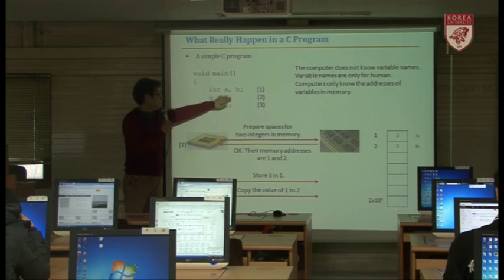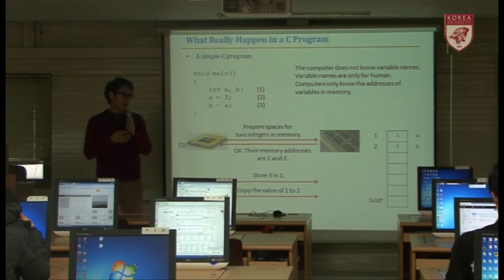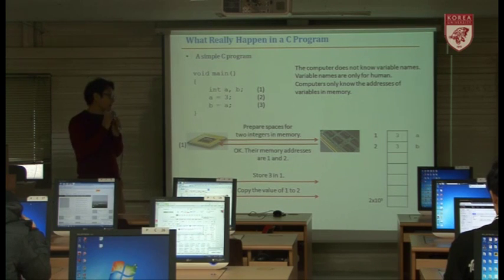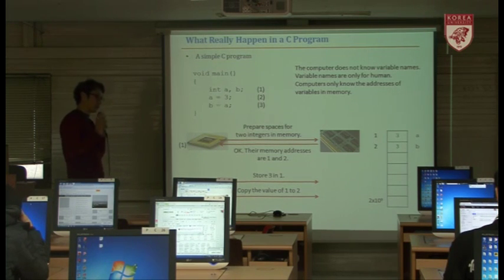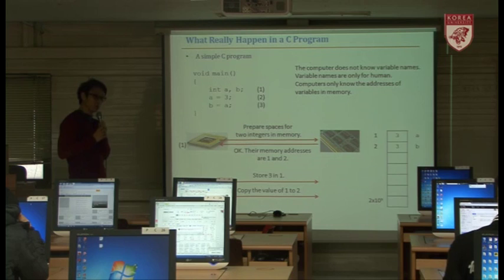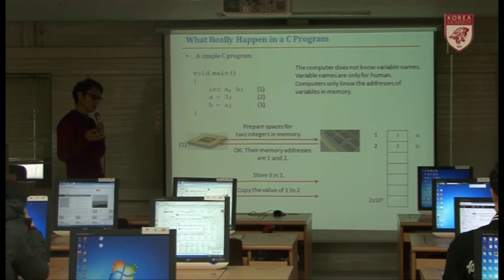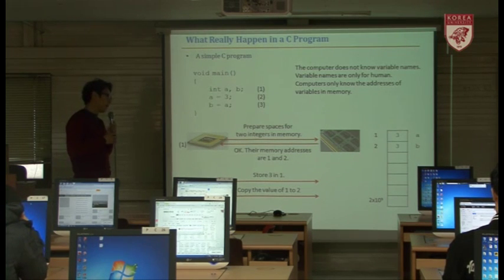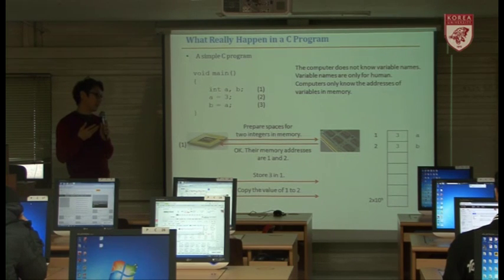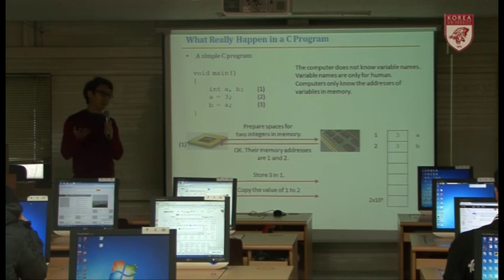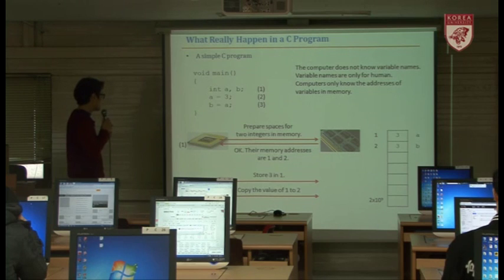Even though we use variable names like A and B, the machine never understands variable names. They don't care what the variable name is — variable names are only for humans. That's why you can use any variable names. I've already said to make variable names more readable and meaningful — for example, 'number of apples' is better than just 'A' because it's more meaningful.